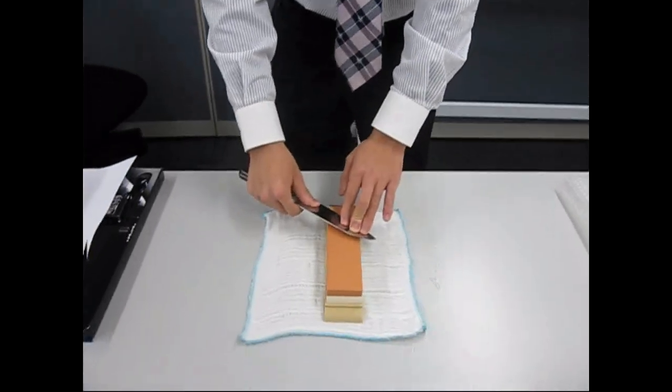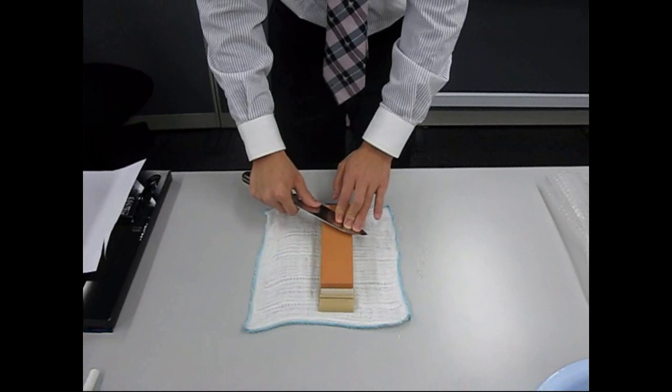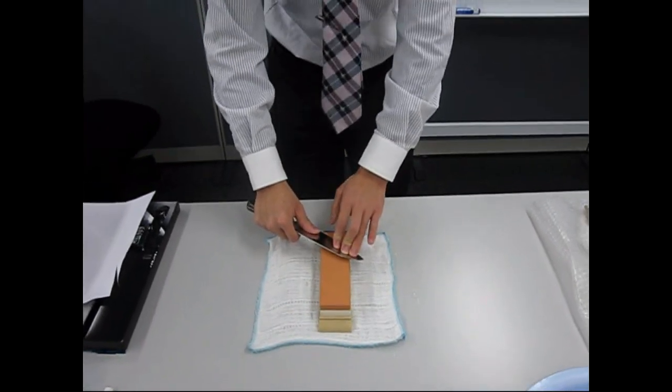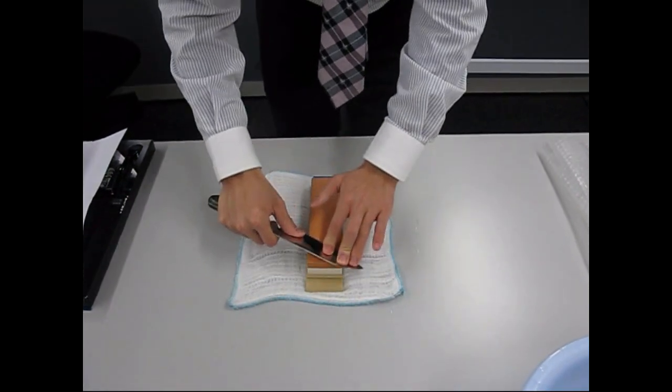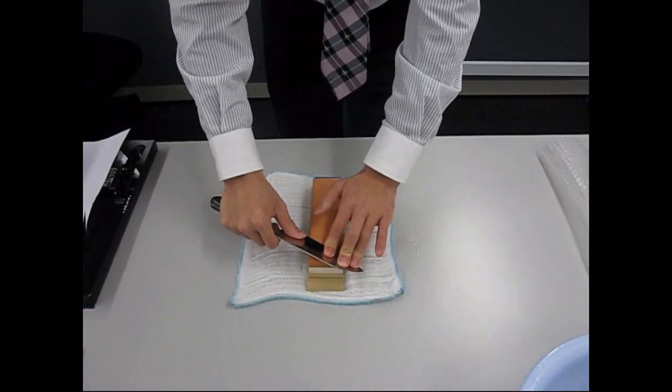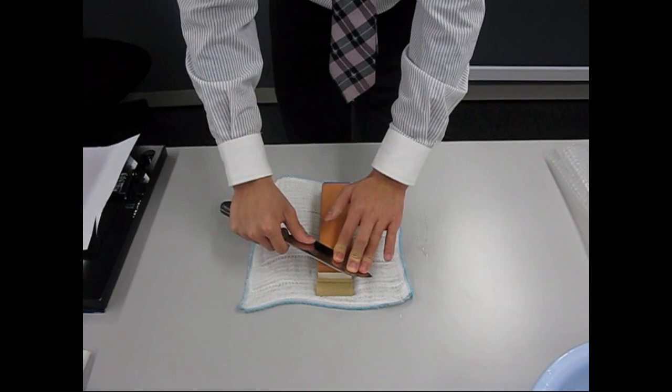Then start grinding. Grind straight away from you, towards the blade, like this, using pressure. And then draw back the kitchen knife, releasing pressure.